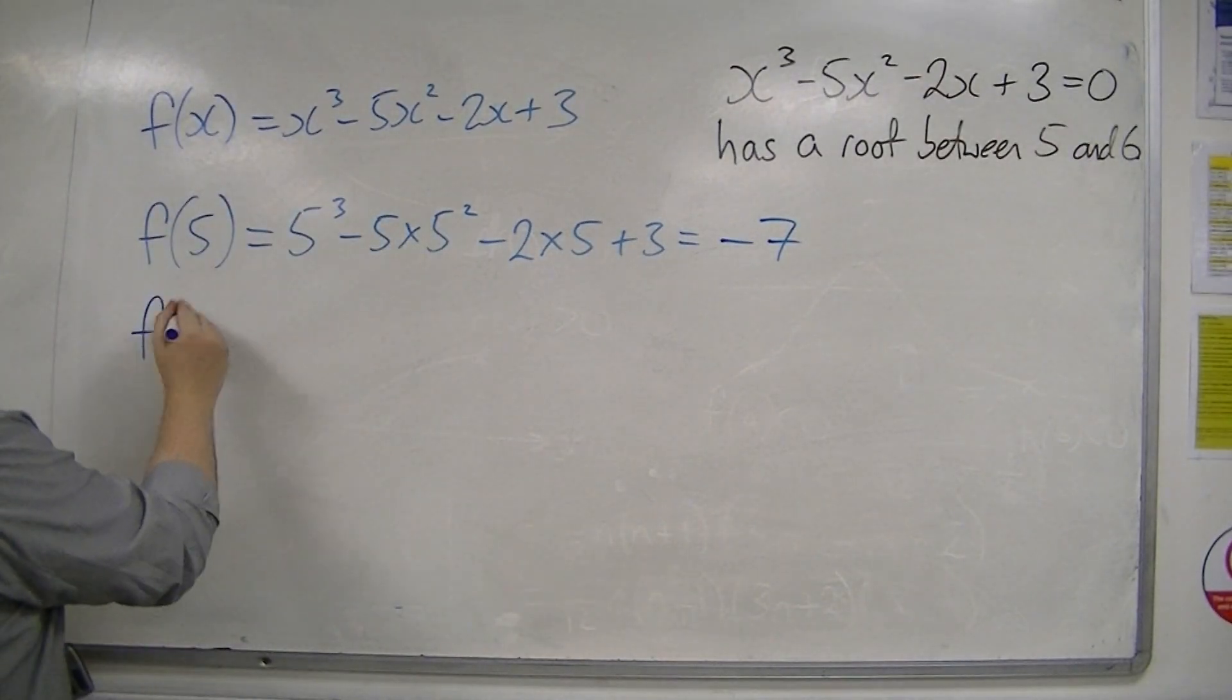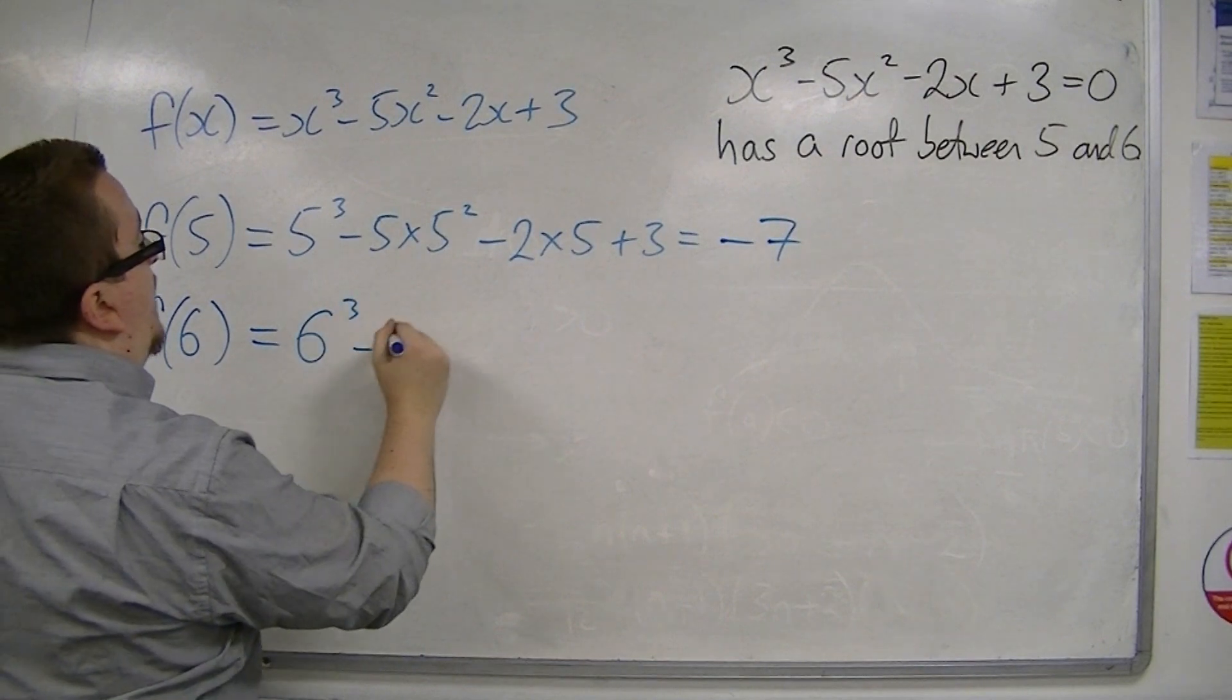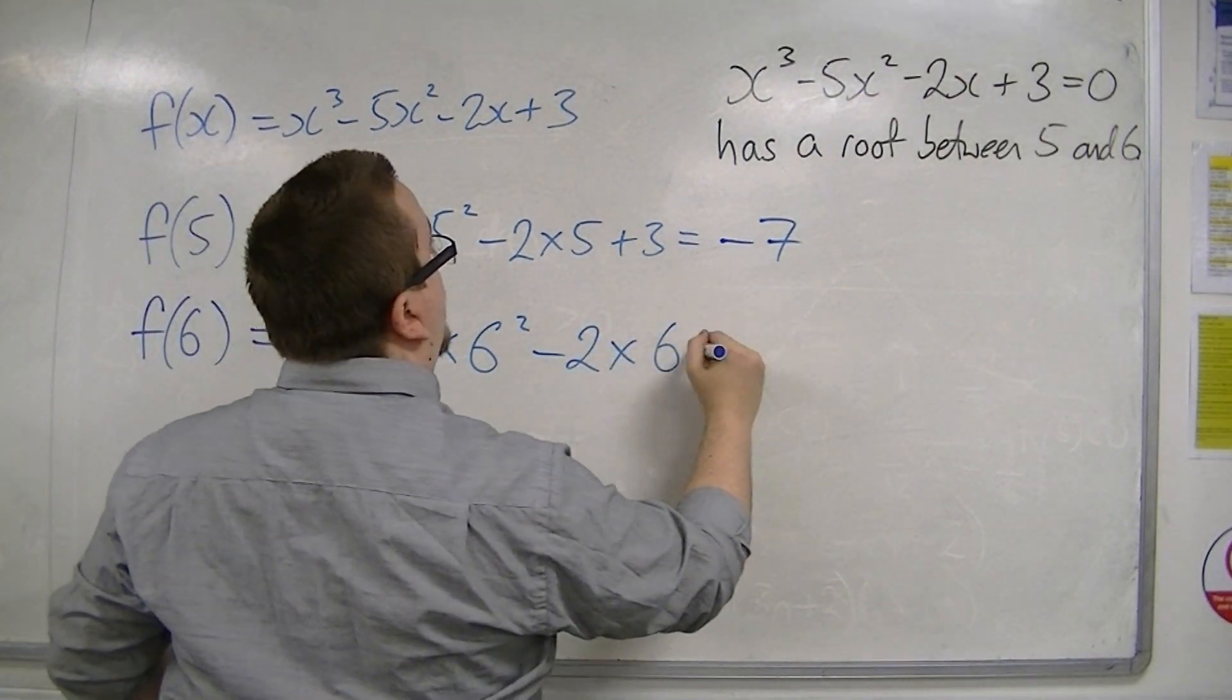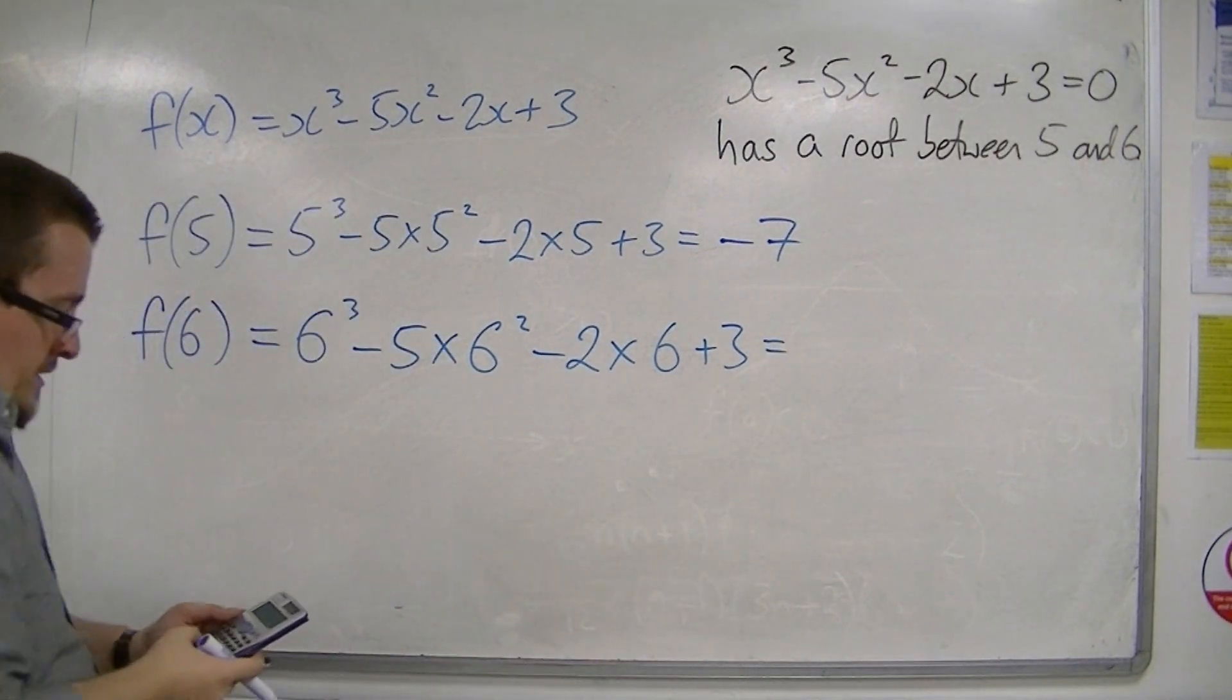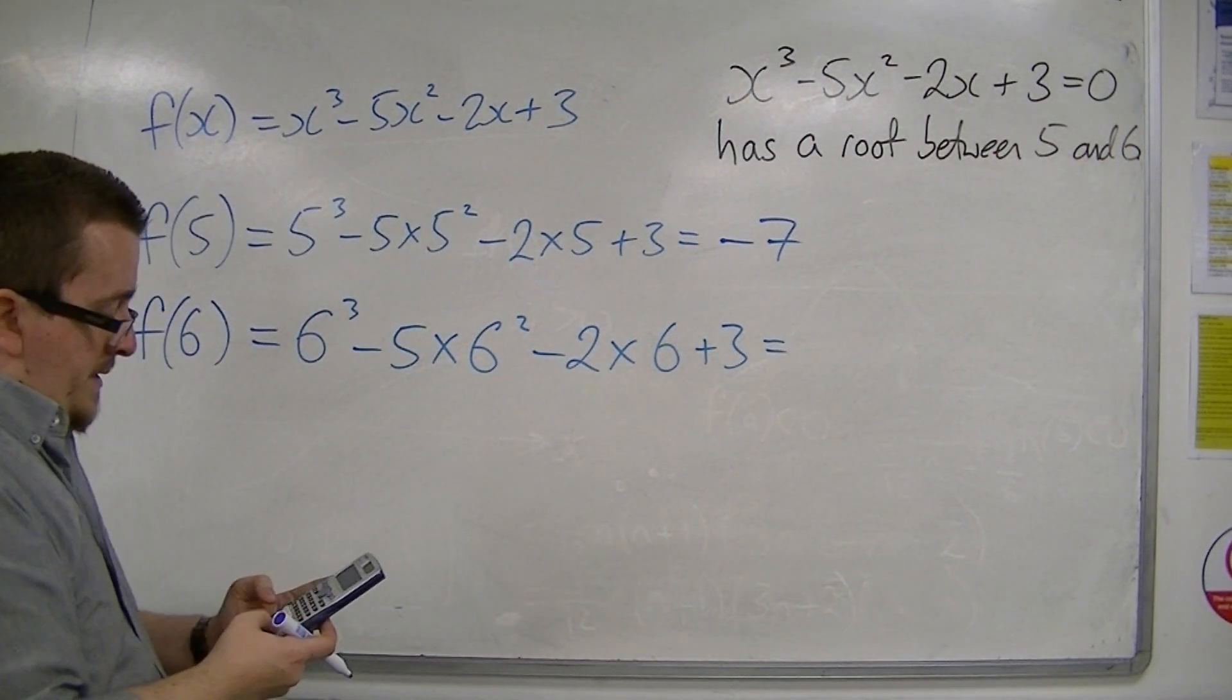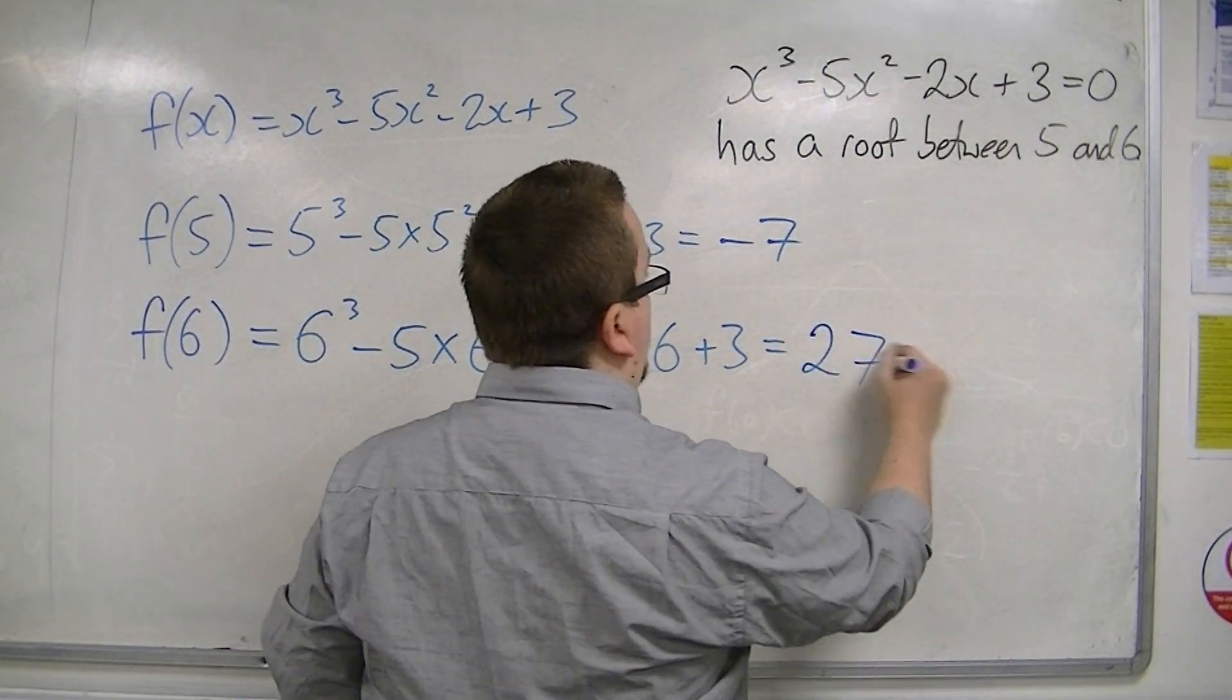Now let's try f(6). I have 6³ - 5 × 6² - 2 × 6 + 3, and that gets me 27.